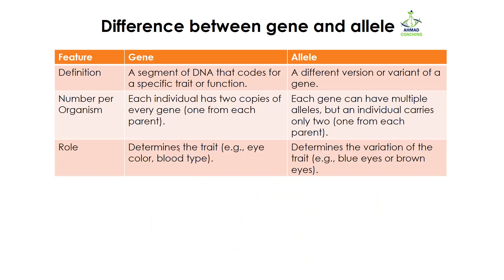The role of a gene is to determine the trait or phenotype, which can be hair color, eye color, height, blood type, or any other expressive trait. When it comes to alleles, the allele determines the variations of the trait — for example, if eye color is the gene or trait, then we can have blue eye color, brown eye color, or green eye color. The variants are determined by the alleles, while the phenotype itself is determined by the gene.